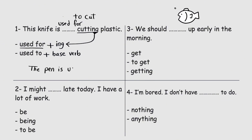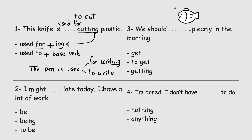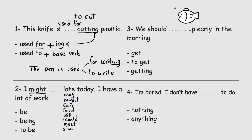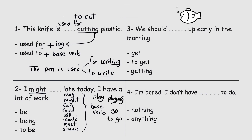The pen is used for writing (-ing) or 'to write' (base verb). Next: I might blank late today — I have a lot of work. The options are 'be', 'being', or 'to be'. 'Might' is a modal verb. May, might, can, could, will, would, must, should — these are all modal verbs, and they are followed by the base verb: play, not playing; go, not to go.